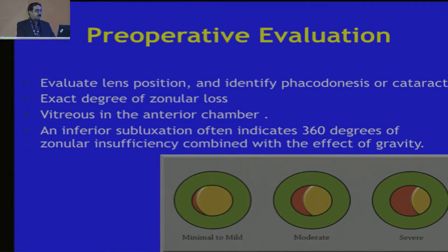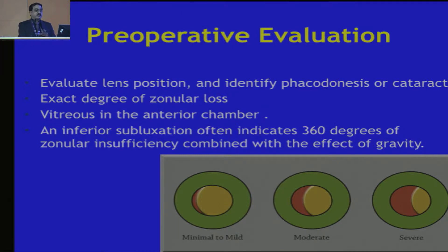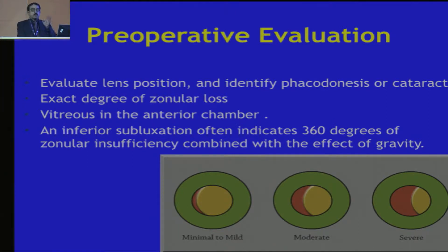Pre-operative evaluation — as just mentioned, the lens position is very important. Phacodonesis during your slit lamp examination, or the amount of cataract, and the zonule loss has to be ascertained as much as possible so that you can plan the surgery before you actually go into it.